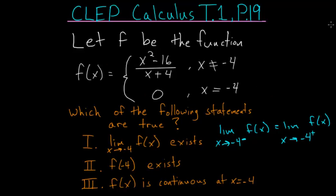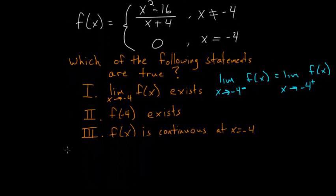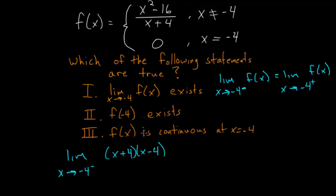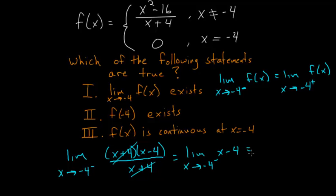Let's evaluate this limit. Taking it from the left first: the limit as x approaches negative 4 from the left of x squared minus 16, which I'll rewrite as (x plus 4)(x minus 4) — since this is a difference of two squares — divided by x plus 4. We can cancel out the (x plus 4) in the numerator and denominator, leaving the limit as x approaches negative 4 from the left of x minus 4. Plugging in numbers slightly more negative than negative 4, we get a number that approaches negative 8.